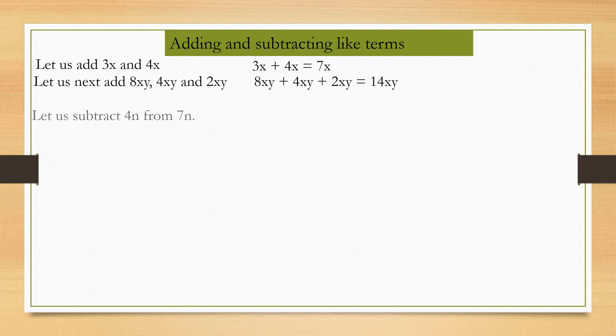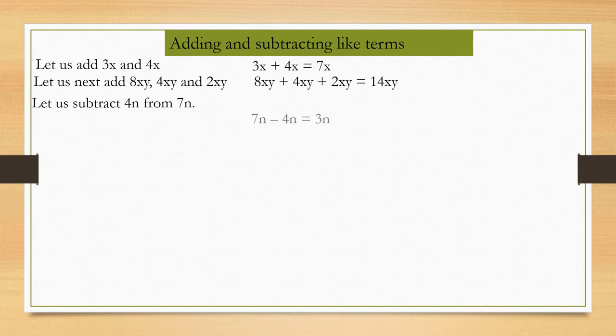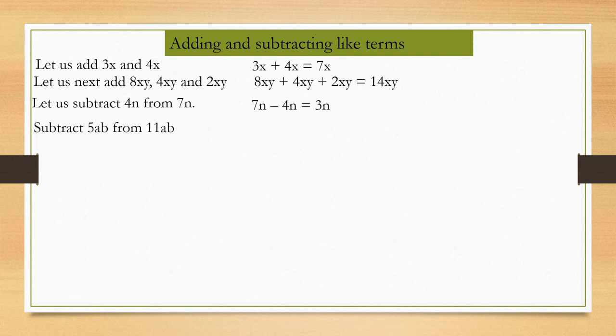Let us subtract 4n from 7n. 7n minus 4n equals 7 minus 4, that is 3n. In the same way, subtract 5ab from 11ab: 11ab minus 5ab equals 11 minus 5, that is 6ab.